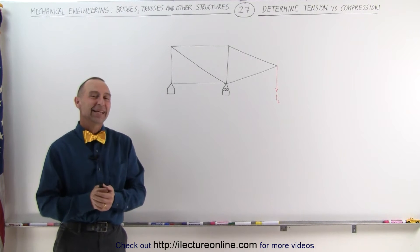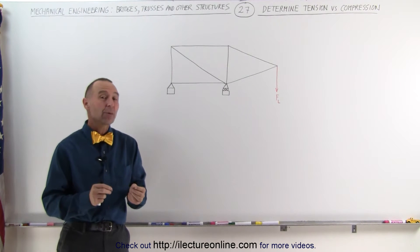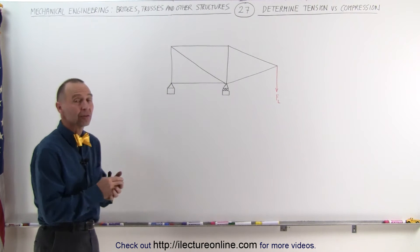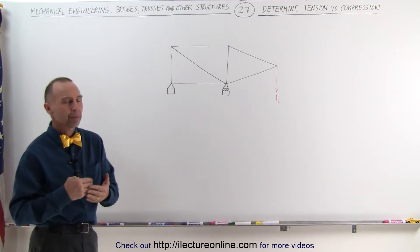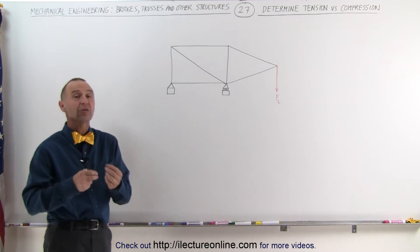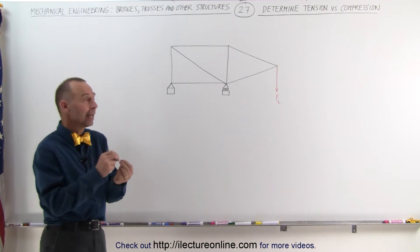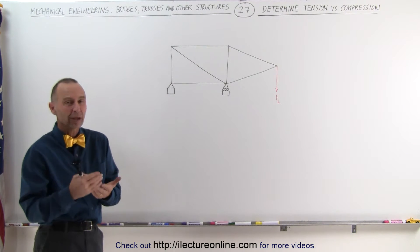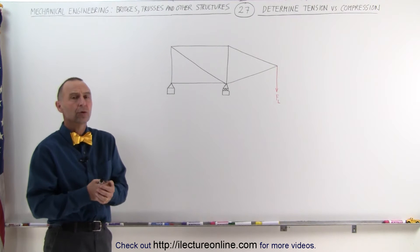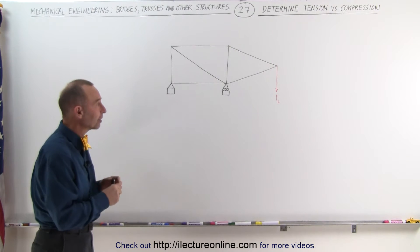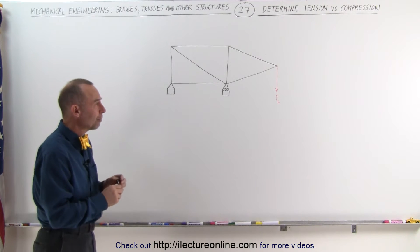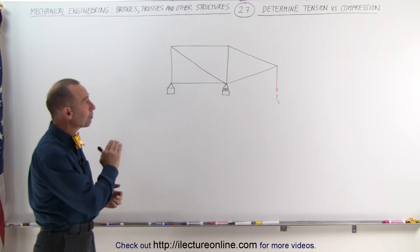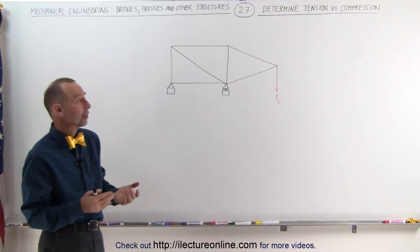Welcome to Electronline. In this video we're going to show you how to find which members are under tension and which members are under compression. We can do this mathematically at each joint by summing up all the forces in the x and y directions. We can also do it by finding the moments about different points, but there are other ways to quickly determine whether members are under tension or compression.